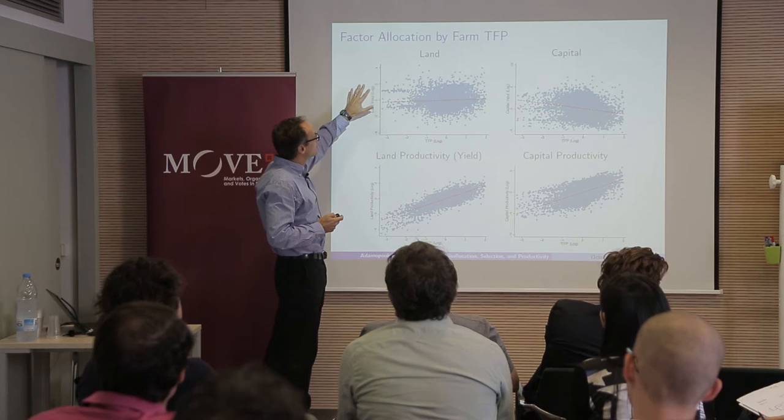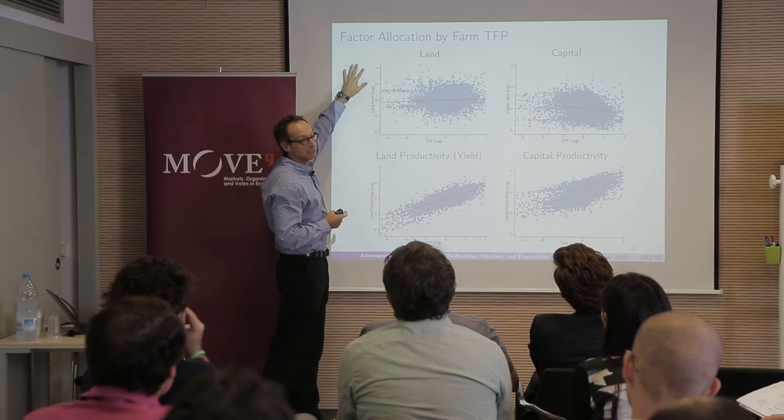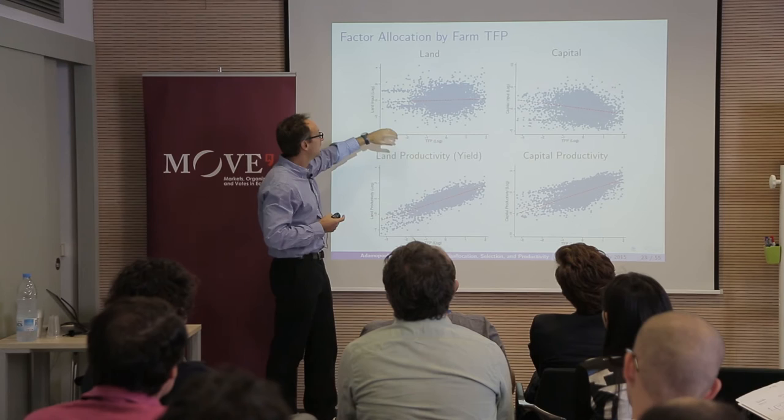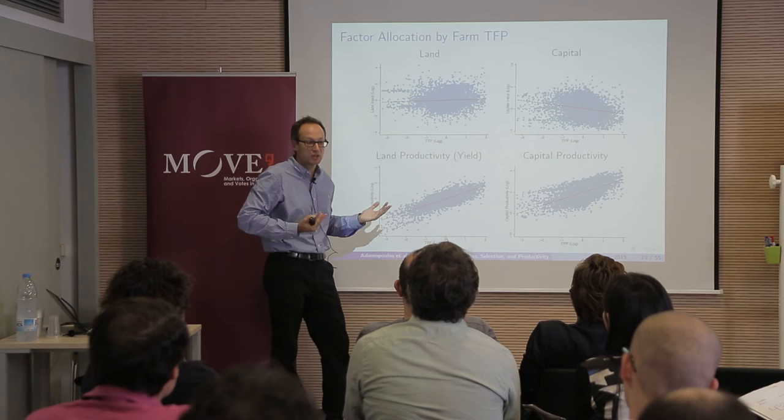This is the allocation of land and capital we see for the year 2000 — it looks very similar throughout all the years. What you see is log TFP versus log land input. The efficient allocation would be a straight line with a positive slope. But basically there's no systematic relationship between the land people have and their TFP.